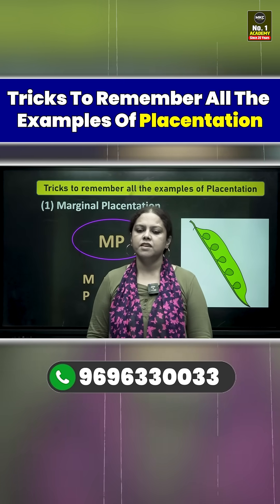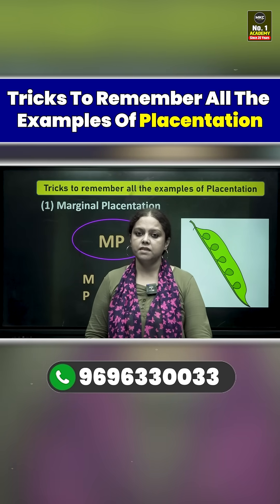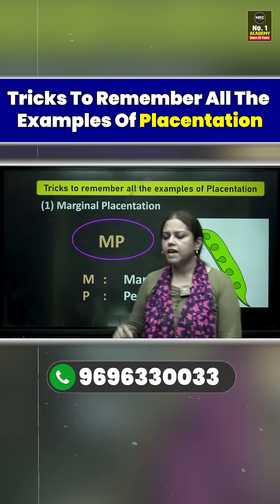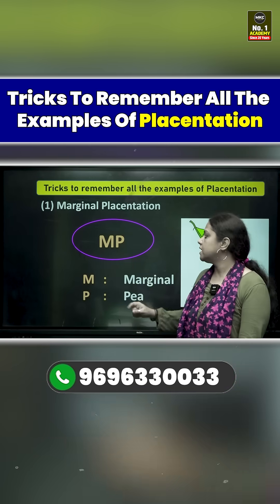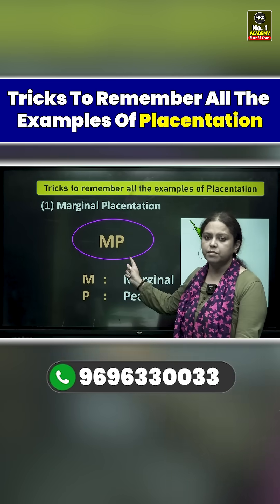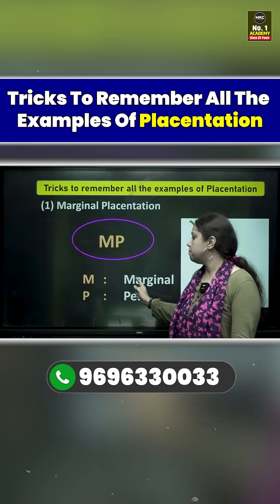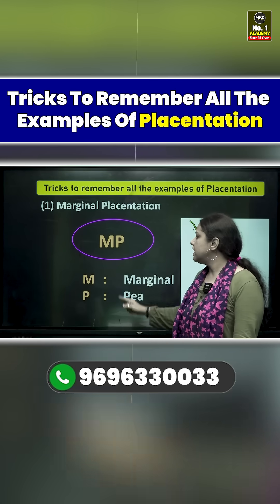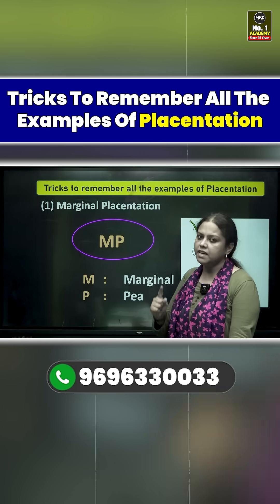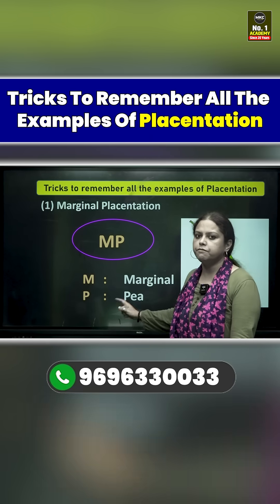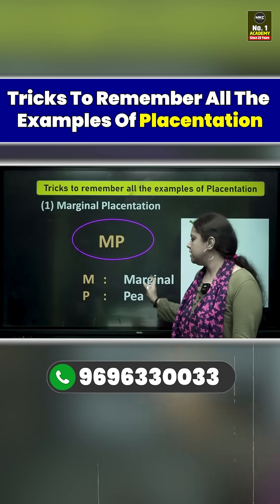First is marginal placentation. The easy trick is MP — that is, Member of Parliament. M stands for Marginal, and P will help you remember Pea as one example of marginal placentation.